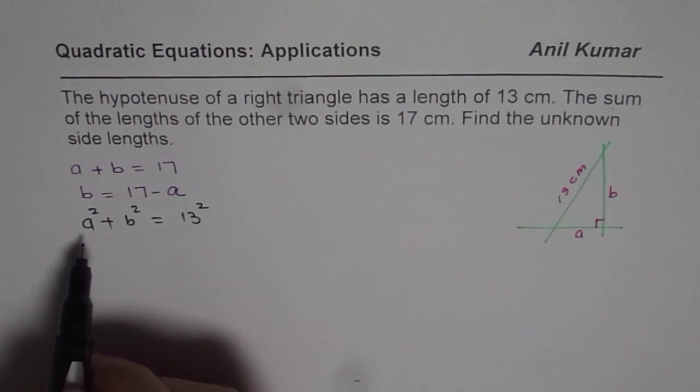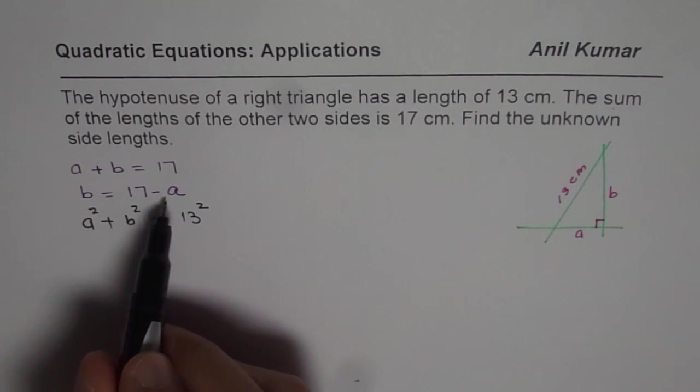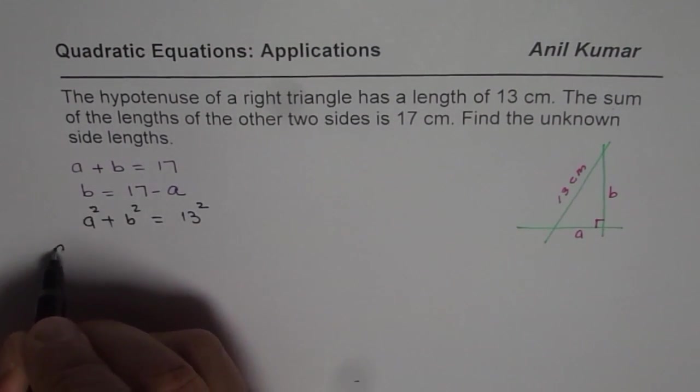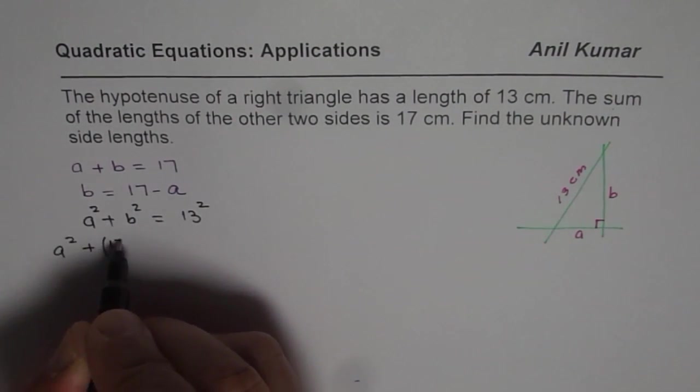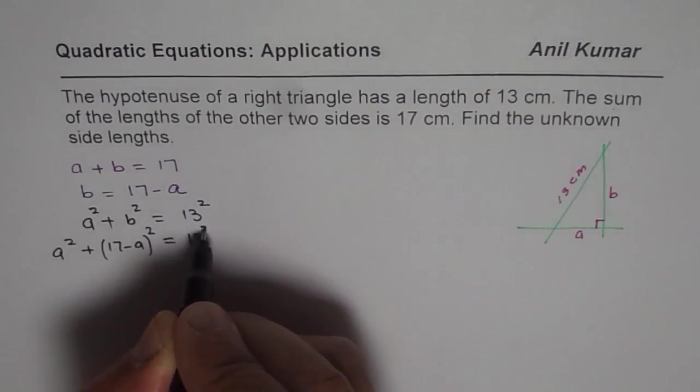We can write B in terms of A as we just found. So substituting 17 minus A for B, we get A² + (17 - A)² = 13².